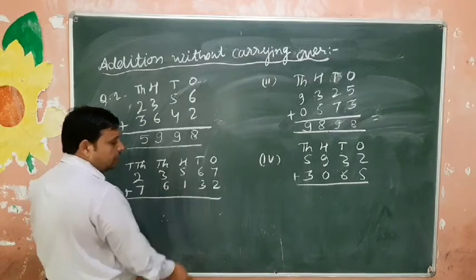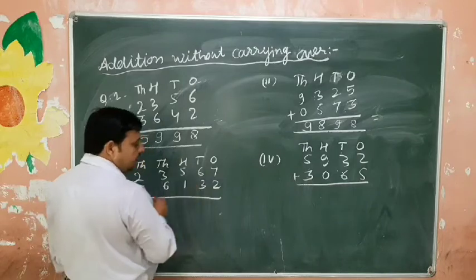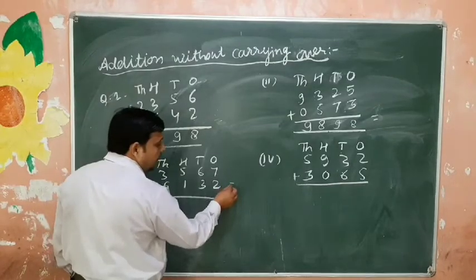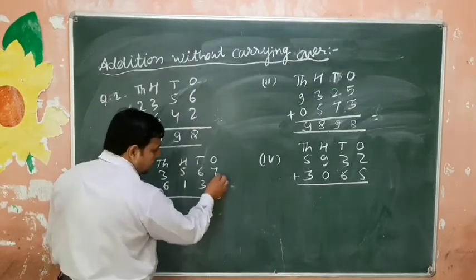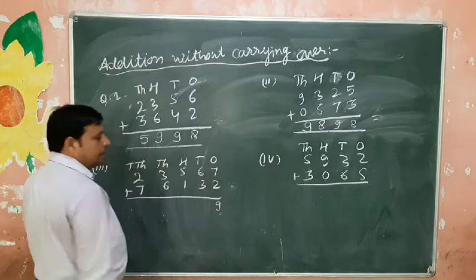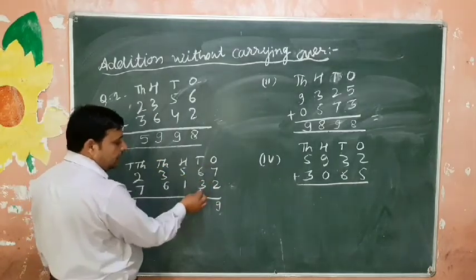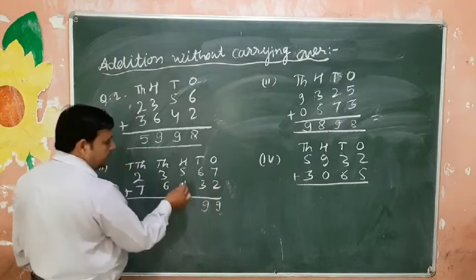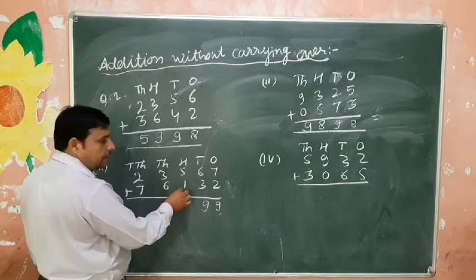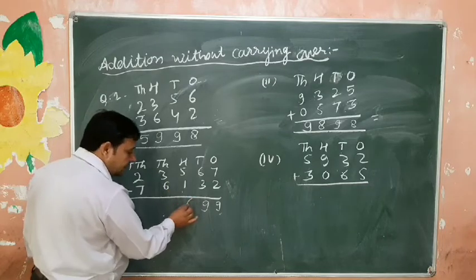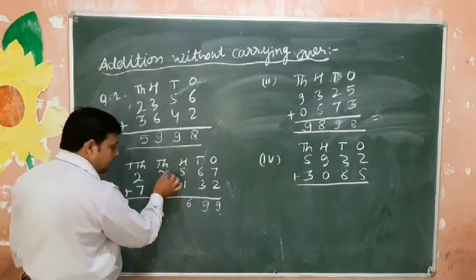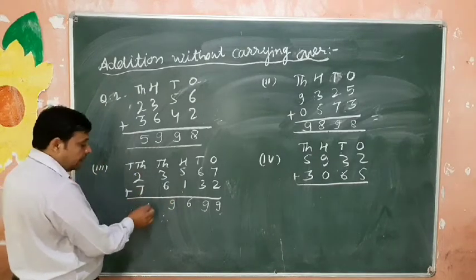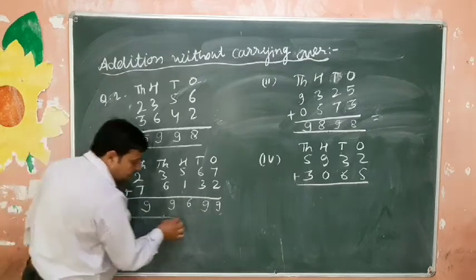Example: 43,567 plus 76,132. Ones place: 7 plus 2 is 9. Tens place: 6 plus 3 is 9. Hundreds place: 5 plus 1 is 6. Thousands place: 3 plus 6 is 9. Ten-thousands place: 2 plus 7 is 9. This is my answer.